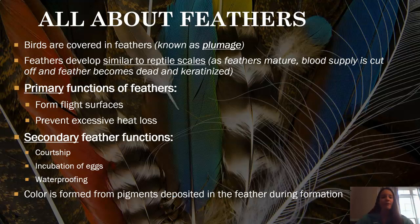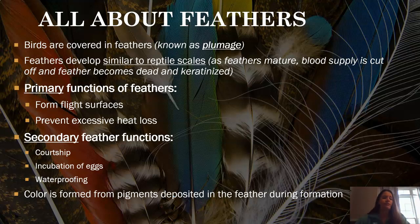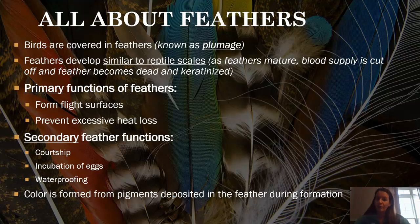We haven't quite talked about the thing that really sets birds apart from everybody else, and that's feathers. They are covered in feathers, known as plumage, and these develop very similarly to reptile scales. The primary functions of feathers are for flight — they form flight surfaces — though obviously there are flightless birds that have evolved. Feathers are also important to prevent excessive heat loss; they act as insulation, and downy feathers are especially important for keeping them warm.